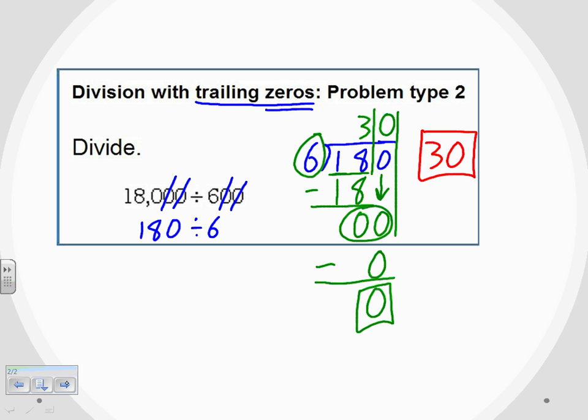So even though we started off with a problem that said 18,000 divided by 600, we turned it into a problem that's 180 divided by 6 because it's a simpler version of the previous problem. And after doing the long division, our answer is 30.